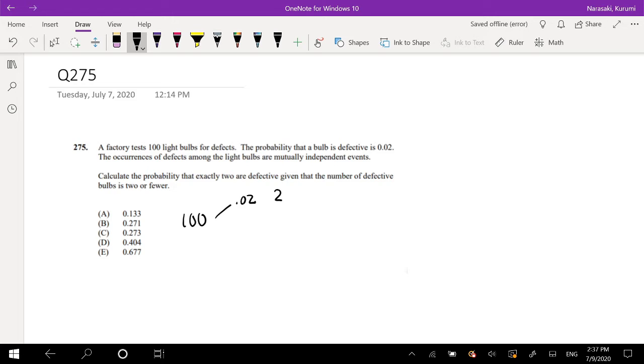The occurrence of defects among the light bulbs are mutually independent events. So I assume the rest is not defective. That means about 98 of them is perfectly fine. Calculate the probability that exactly 2 are defective, given that the number of defective bulbs is 2 or fewer.